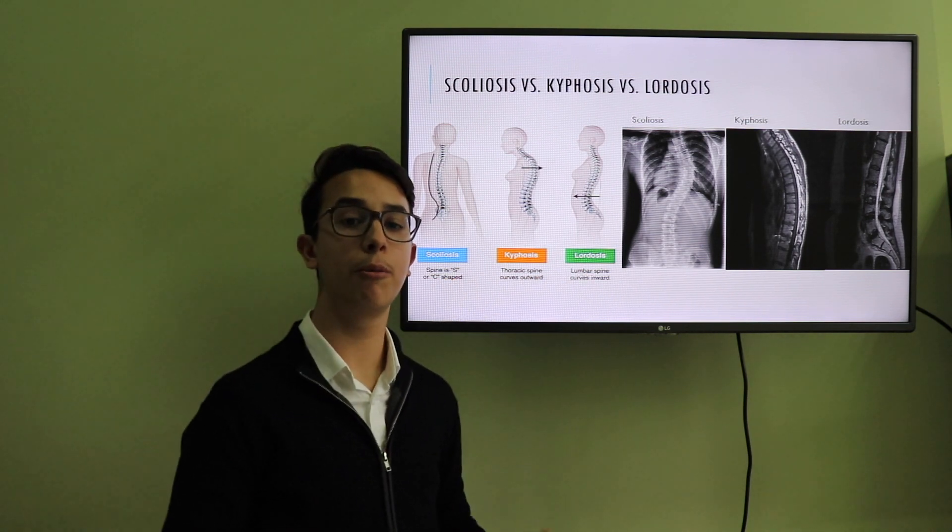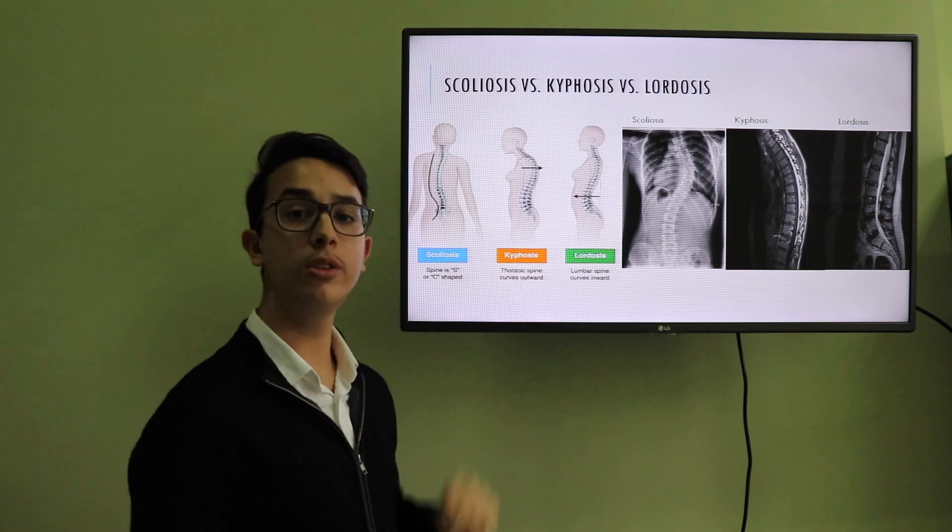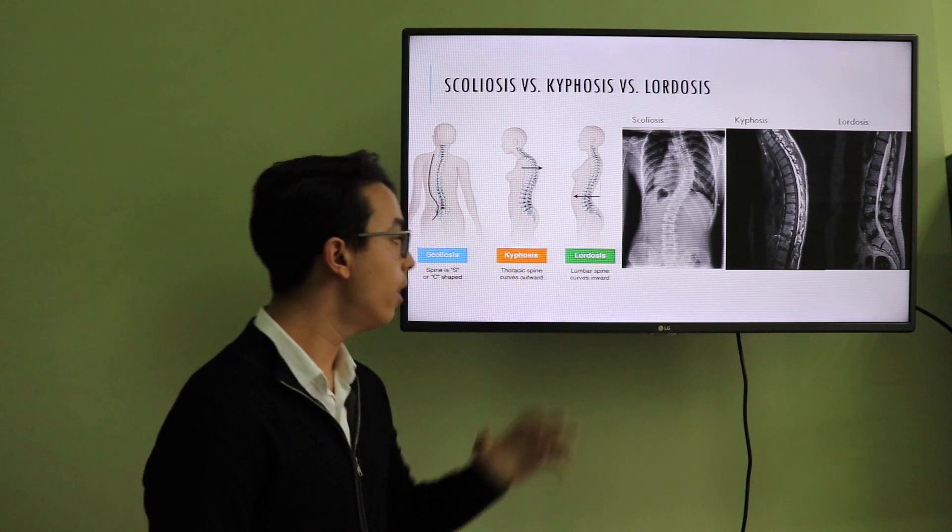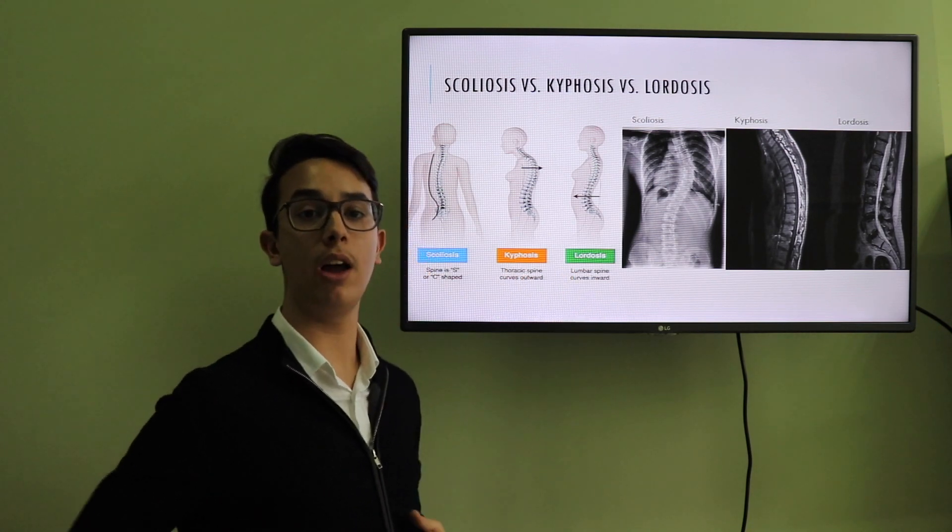Scoliosis is a tilting of the spine left or right. Kyphosis is a tilting of the spine posteriorly. And lordosis is a tilting of the spine anteriorly.